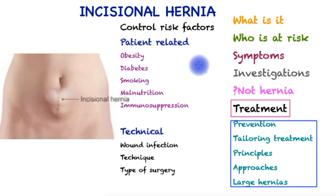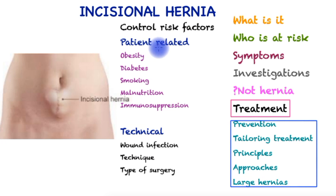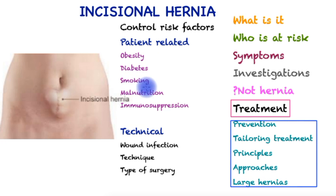In terms of prevention, it is important to control risk factors wherever possible. These can be patient-related or technical. Patient-related high-risk factors include obesity — especially a BMI greater than 33 — poorly controlled diabetes, smoking, malnutrition, and immunosuppression.